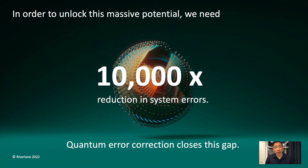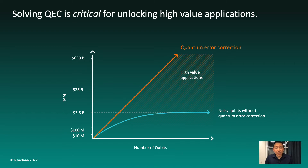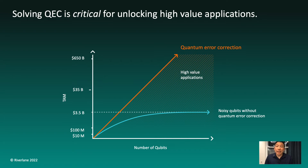So how important is quantum error correction? In estimates that Riverlane and other groups have performed, we see some clear limits on the type of problems quantum computers without error correction can tackle. While there's definitely some value in increasing the number of qubits of the noisy computers we have today, the size of this market quickly tops out because these problems can also be solved using classical approaches like supercomputers and GPUs. The really high-value applications — solving the problems that supercomputers and GPUs can never solve — will all require quantum error correction.